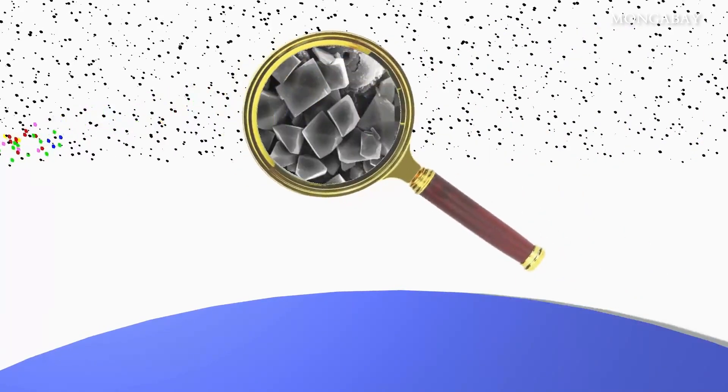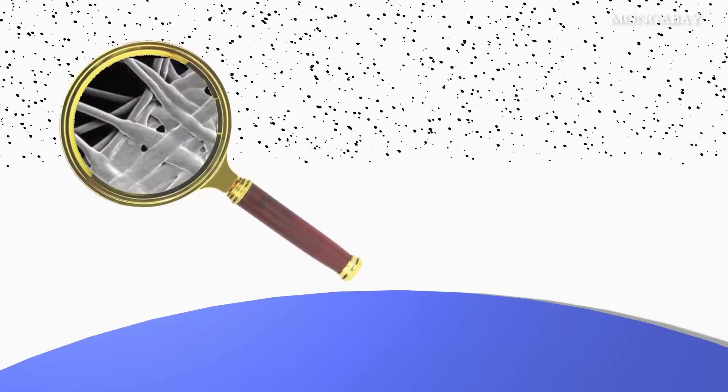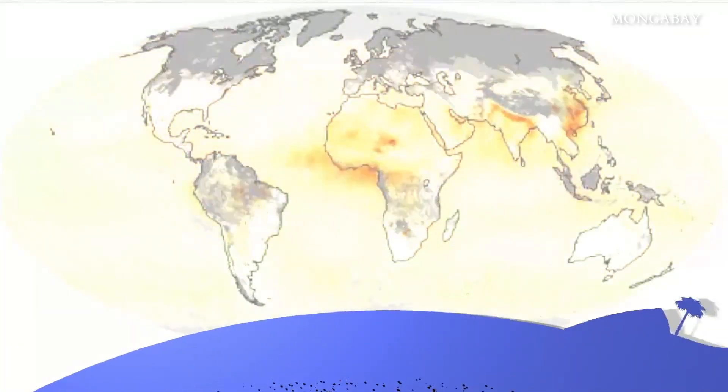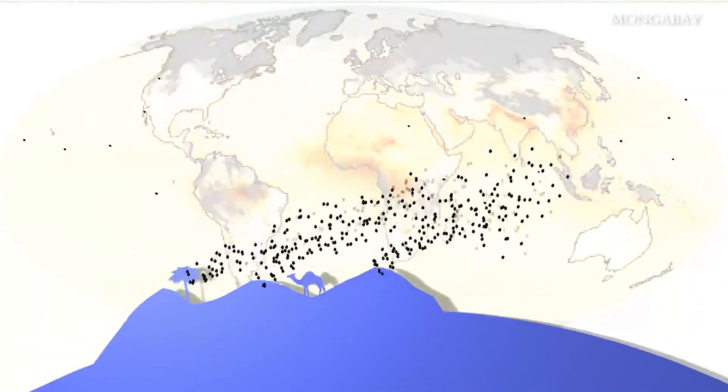Unlike greenhouse gases, aerosols usually stay near their source, only remaining aloft for a few days or weeks until they fall to earth. Despite that, they can have complex and far-reaching consequences for weather, climate, other earth systems, and human health. While naturally forming aerosols haven't increased over the last hundred years, the amount of human-made aerosols has risen sharply.